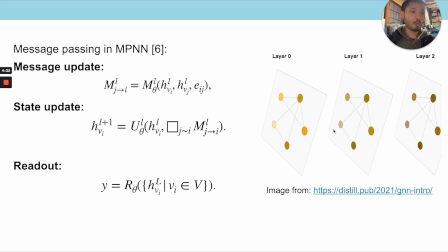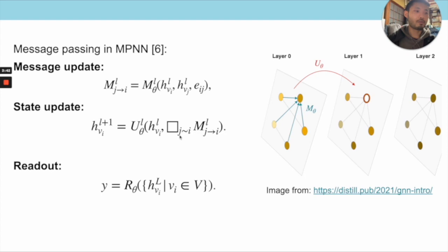To update a node, the first step is to send messages from all its neighbors in the previous layer, where the message is modelled by a neural network taking as inputs the hidden states at source and target nodes plus edge features if available. The second step computes the state update using a neural network with inputs given by the previous state and an aggregation of all incoming messages, where the aggregation operator is any permutation-invariant operation such as sum, product, or mean.